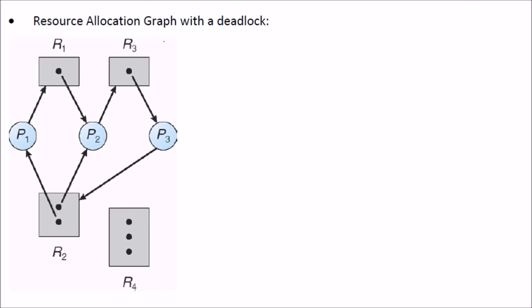Resource allocation graph with deadlock, let us see an example of that. In this, we have P2 wanting R3, but R3 is assigned to P3 and P3 is wanting R2 and R2 is assigned to P2. So this is a circle. This is a cycle.